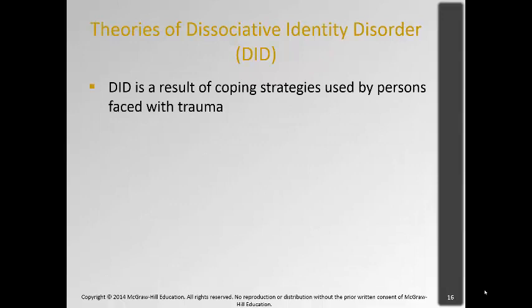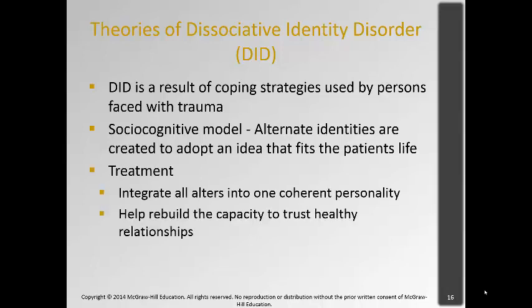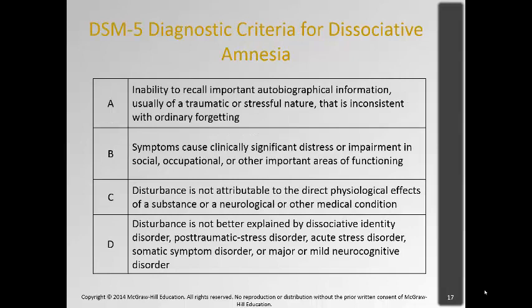One theory of DID is that it results from coping strategies used by people with trauma, and that these alternative identities are adopted as ideas that fit the patient's life. To treat it, you avoid reinforcing the alters by treating the person as one coherent personality — their original host persona — and then help them rebuild the capacity to trust in healthy relationships again.